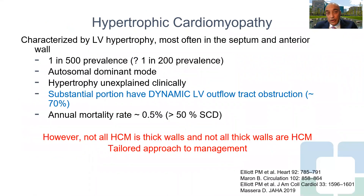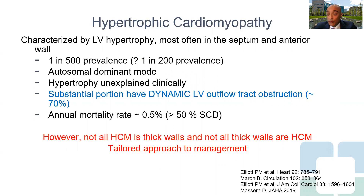Hypertrophic cardiomyopathy is characterized by left ventricular hypertrophy which is out of proportion to what can be explained by other clinical means. It is most commonly seen in the septum and anterior wall, with a prevalence of about one in 500, and is typically transmitted in an autosomal dominant mode. An important aspect of HCM is that if looked for carefully, a substantial proportion have dynamic outflow tract obstruction in about 70% of patients. However, not all HCM is thick walls, and not all thick walls constitute HCM, so we do need a tailored approach to management.